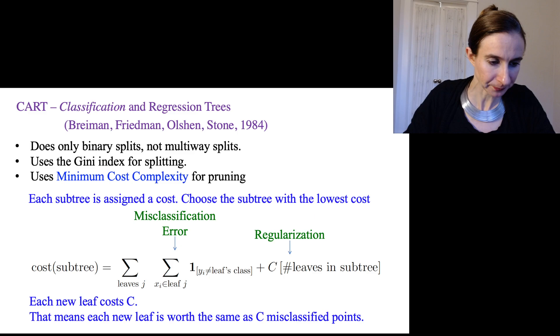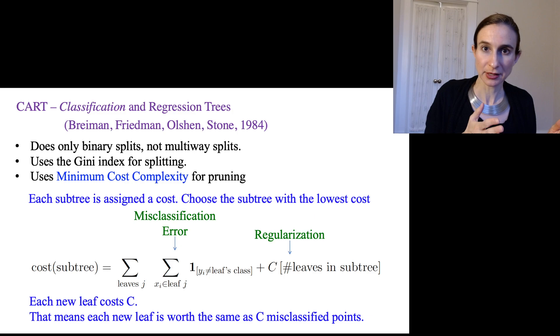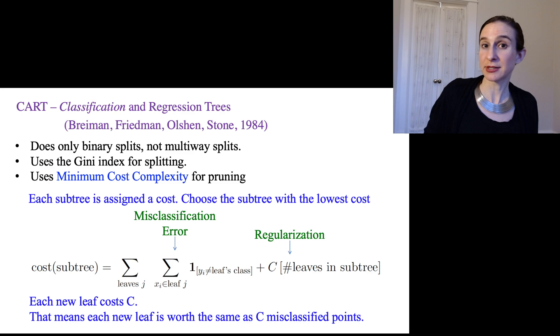So the way you can think about this is that because both of these two terms are counts, like they're discrete, then you can think that every time you add a new leaf, that costs C units, C being the regularization parameter. So that means that each new leaf is worth the same thing as C misclassified points. Because if you're going to add one leaf, you lose C. And if you're going to add C misclassified points, you lose C.